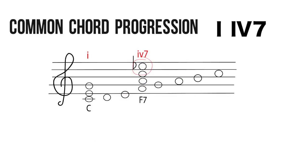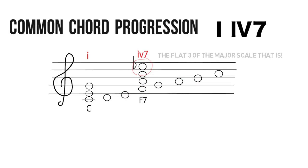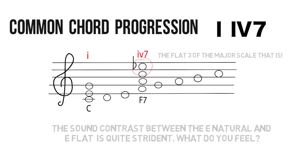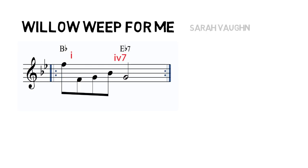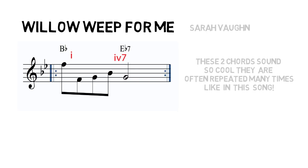Progression four: One to Four Seven. This is a bluesy sound, adding the flat three into the mix. Let's hear a great song — 'Willow Weep for Me,' sung by Sarah Vaughan — with these exact chords here at the beginning in B-flat. This is quite an identifiable progression because it's so bluesy — the one to the four seven, adding the flat three of the key, is really a blue sound.